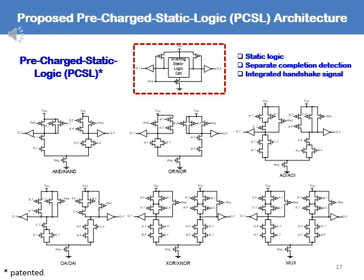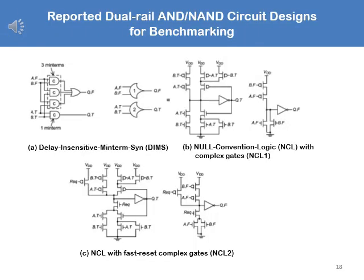The PCSL architecture integrates the sub-circuit associated with the request signal and a buffer to each output into a standard static logic library cell, redesigned for dual-rail logic. It shares common transistors, which reduces the number of transistors, resulting in simultaneously lower power/energy dissipation, faster speed, and smaller area. This slide also shows a schematic of six PCSL cells — of particular interest is the NAND cell on the middle left-hand side. The competing methods are DIMS (Delay Insensitive Mean Term Synthesis) and NCL1 and NCL2, whose circuits are much more complex.